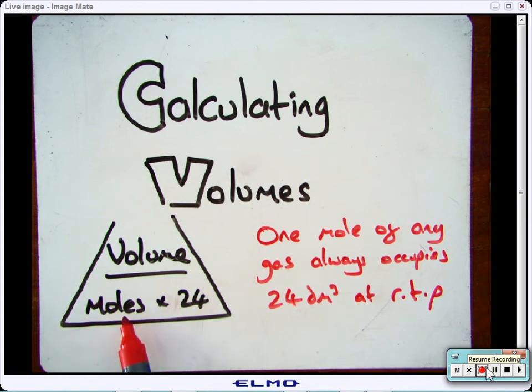Therefore, if you have 2 moles, you times it by 24, and that will be 48 decimeters cubed, and so on. So you can work out the moles for any reaction using moles equals mass over MR, and then calculate the volume.